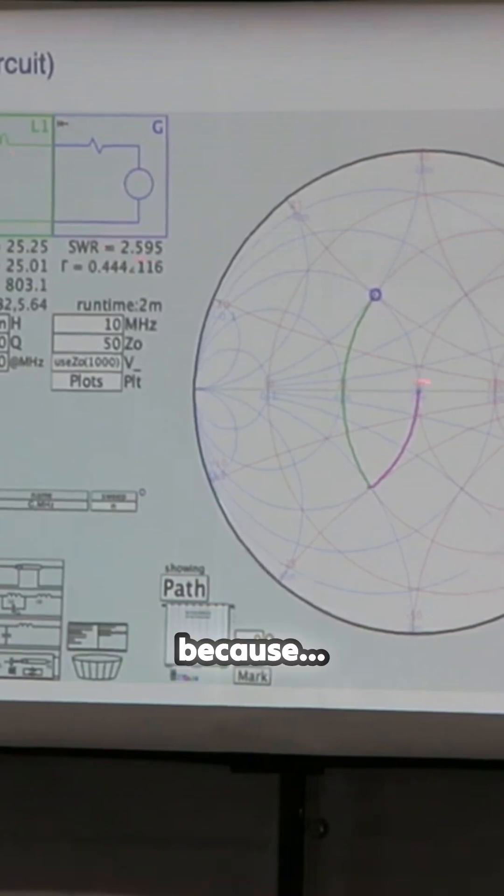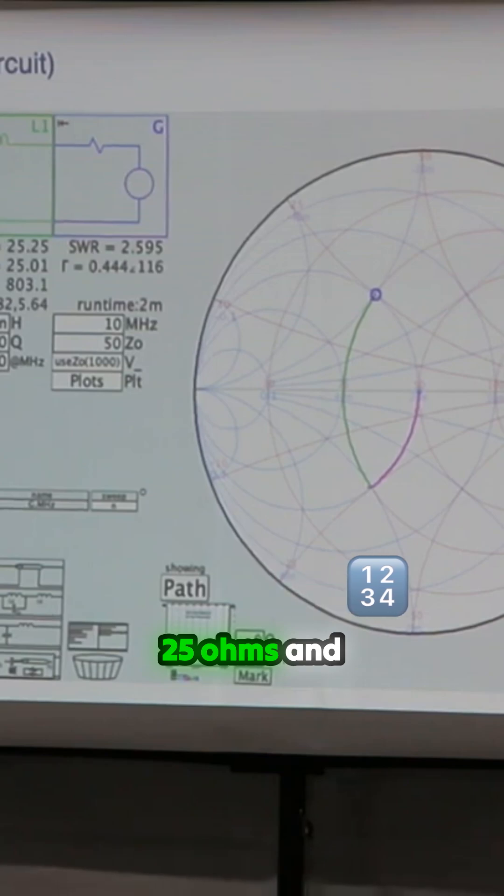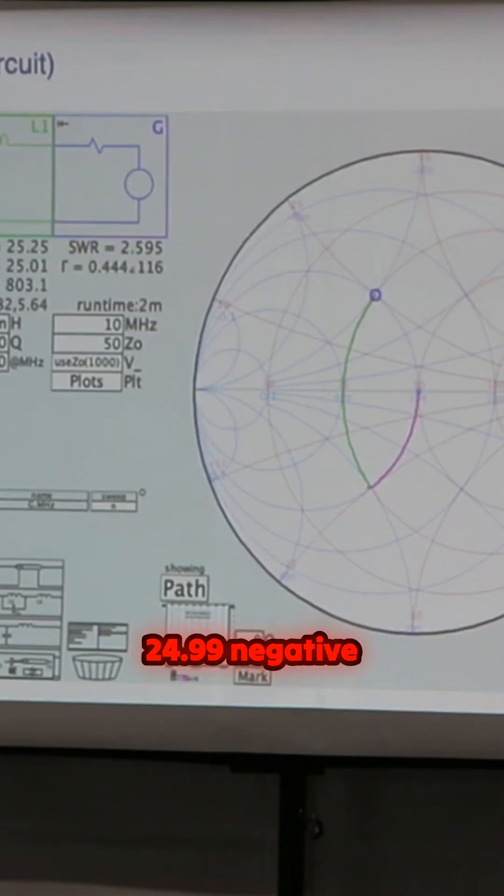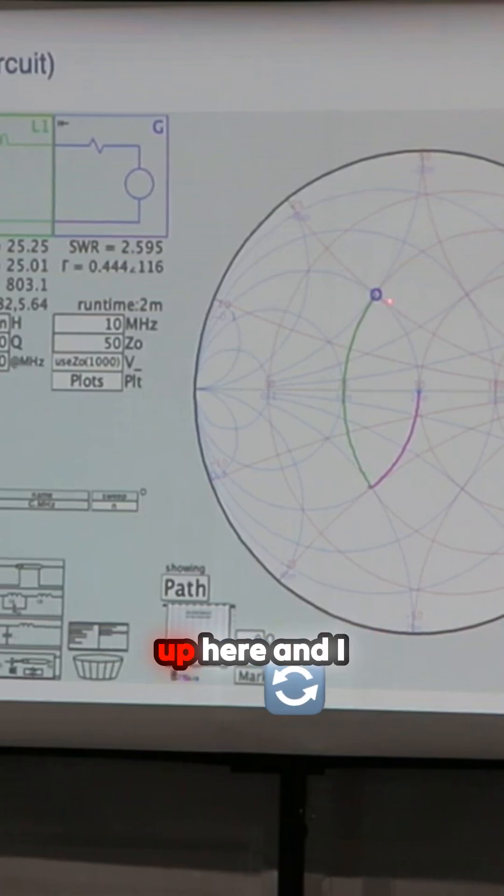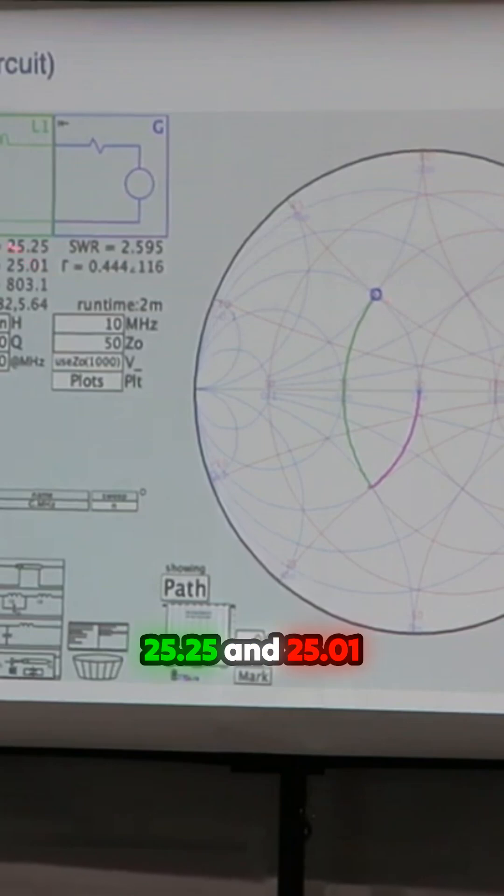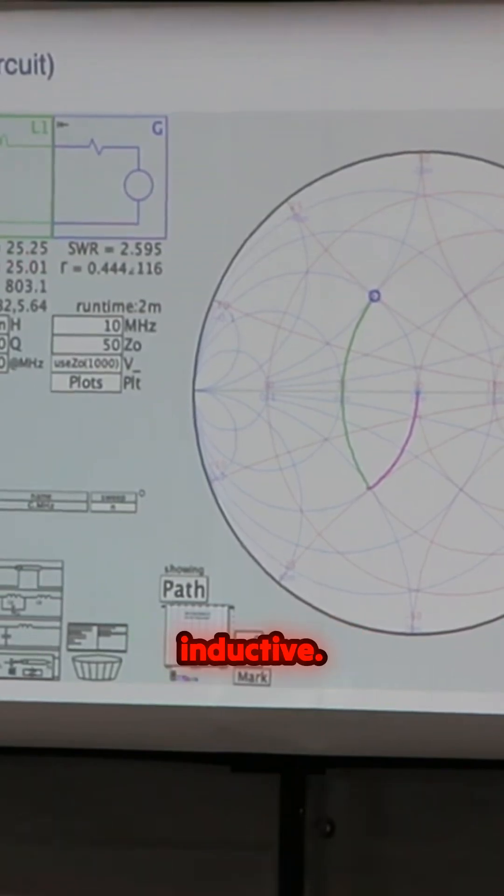Because here at 50 ohms, I've added my capacitor and I took it all the way down here. So now what my inductor sees is 25 ohms and 24.99 negative ohms capacitance. And then by adding my inductor, I swing everything back up here and I still end up with a terrible SWR because I'm 25.25 and 25.01 inductive.